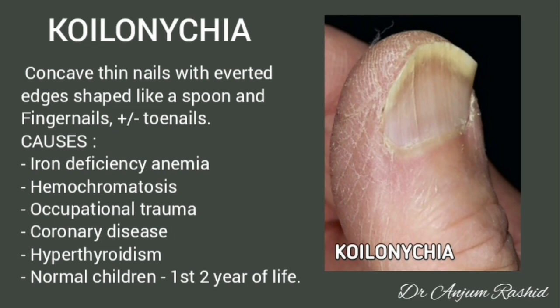Koilonychia: these are concave thin nails with everted edges shaped like a spoon. Fingernails and occasionally toenails may be affected. Causes include iron deficiency anemia, hemochromatosis, occupational trauma, coronary disease, hyperthyroidism, or they may be present as a normal variant in the first two years of life.